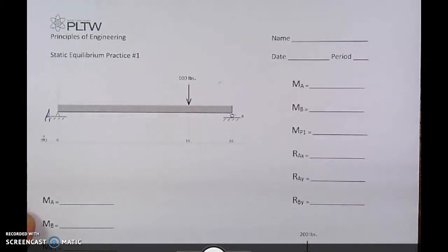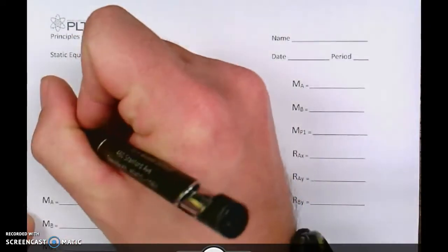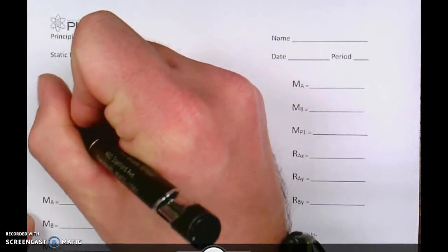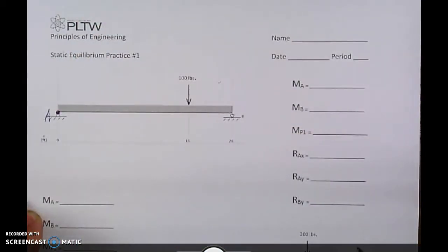So we're going to start with the pinned joint right here as our point of rotation, so I'm going to put a little dot there at point A to represent our starting point.